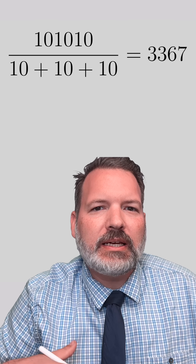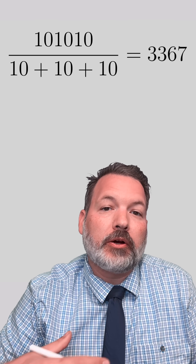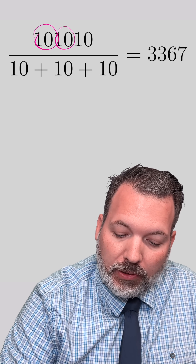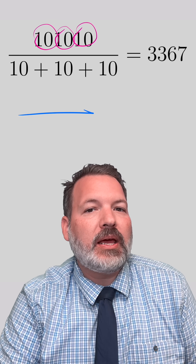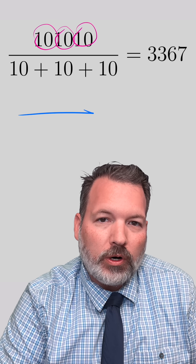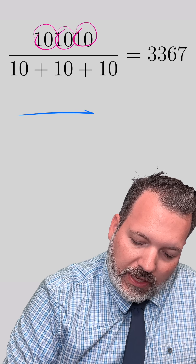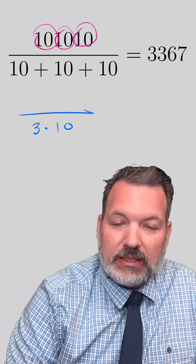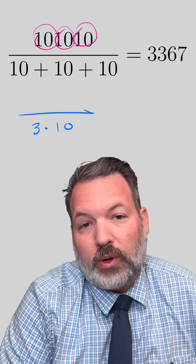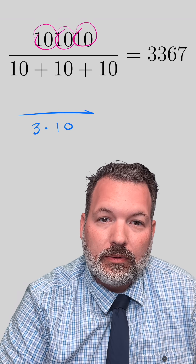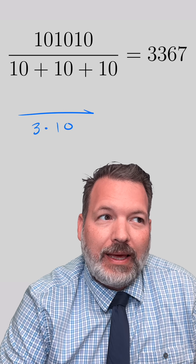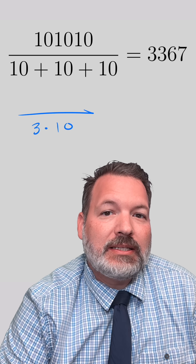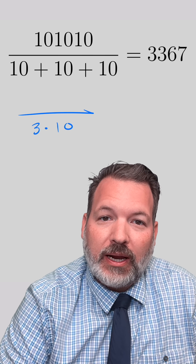Now let's figure out why this doesn't keep happening when A is no longer a single digit, but instead a multi-digit number like 10. The denominator is still working the way we would expect: 10 plus 10 plus 10 is indeed the same thing as 30, or 3 times 10. But in our numerator, the number 10, 10, 10 is not the same as 10 times 111 anymore.